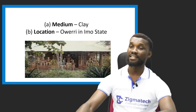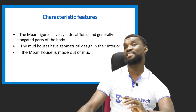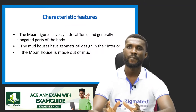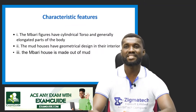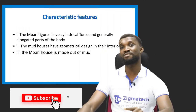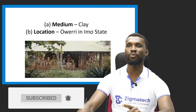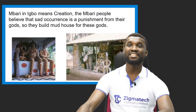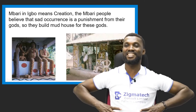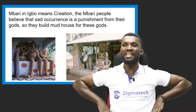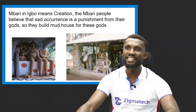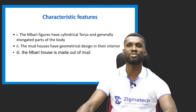Let's look at the characteristic features of the Mbari art. The Mbari art figures have cylindrical torsos and generally elongated body parts. If you look at the previous slides, you will understand how this art looks. You can see how long and cylindrical the body shapes are. The figures always have their hands placed on their shoulders — they fold their hands. That is the nature of the art: elongated shapes throughout.